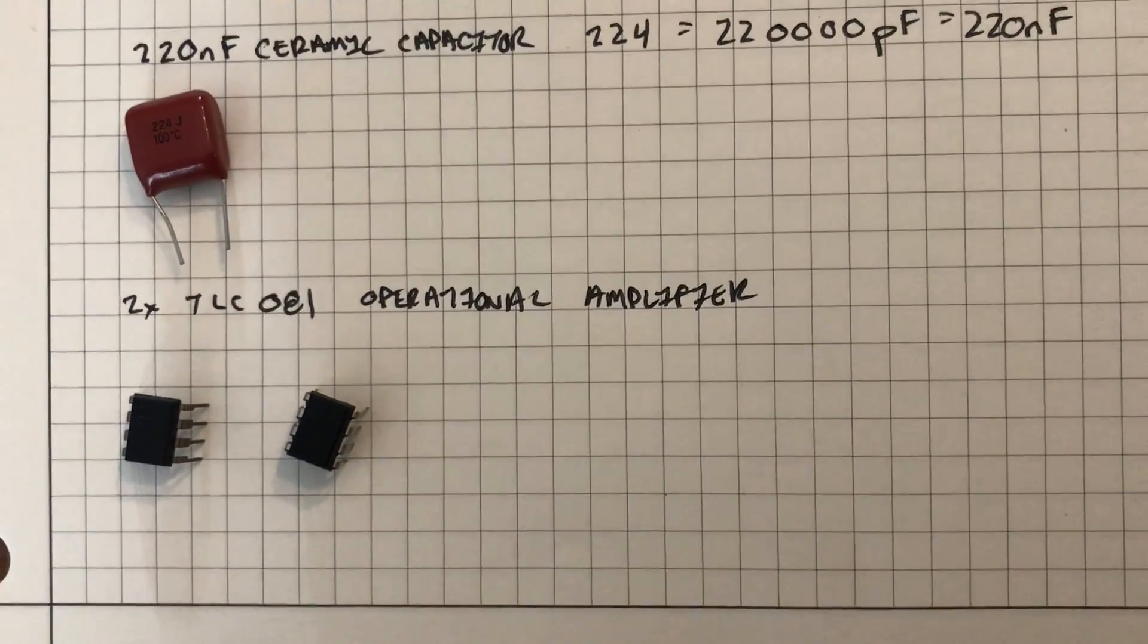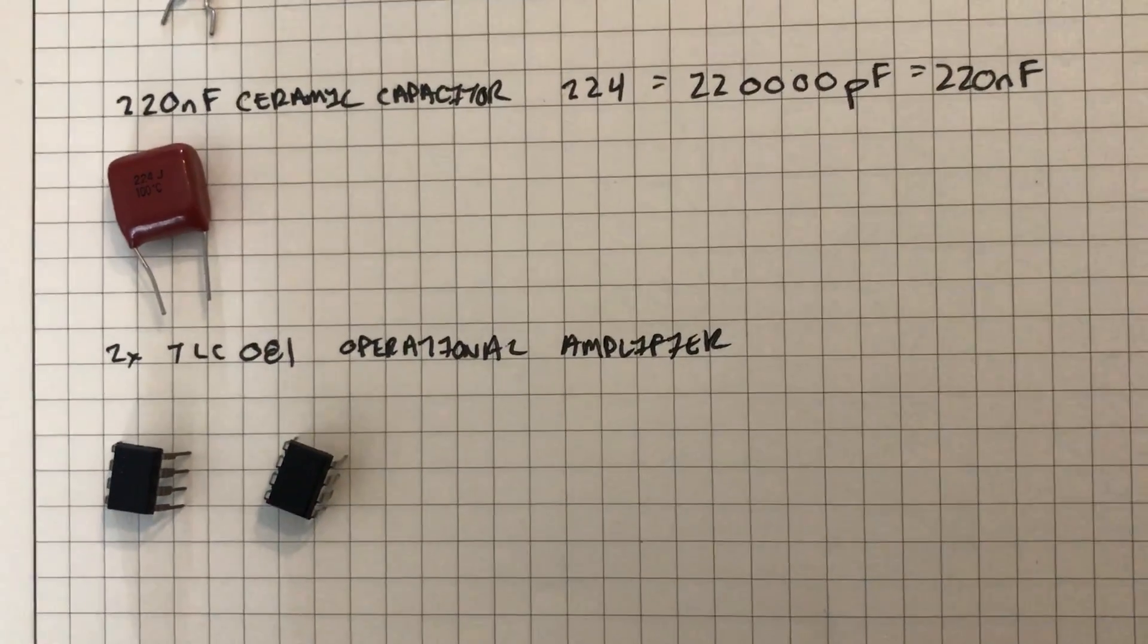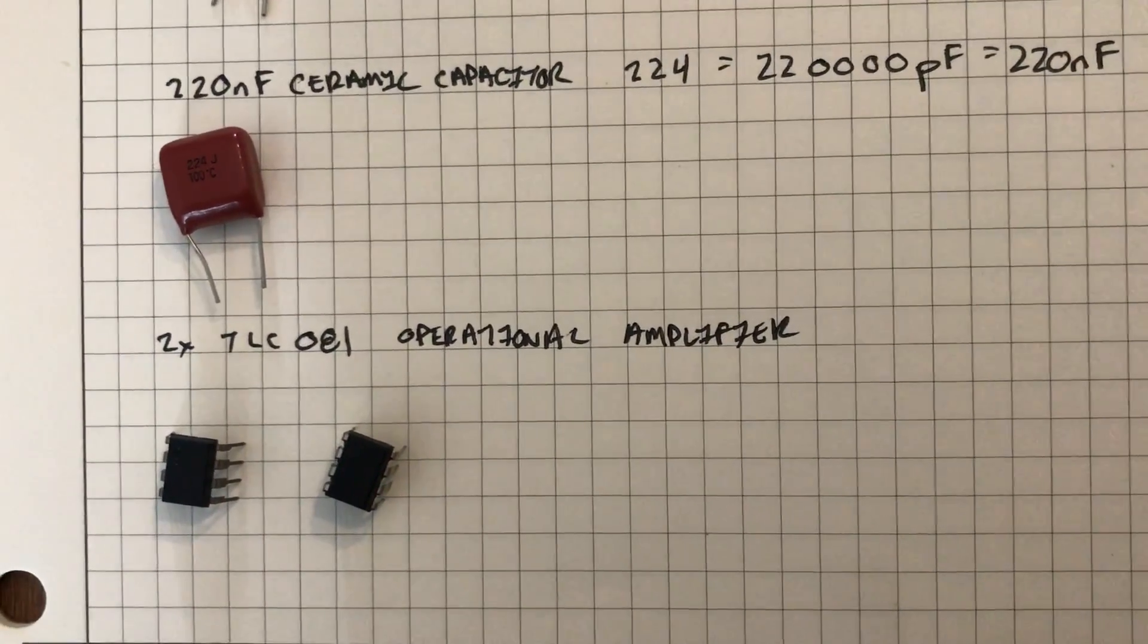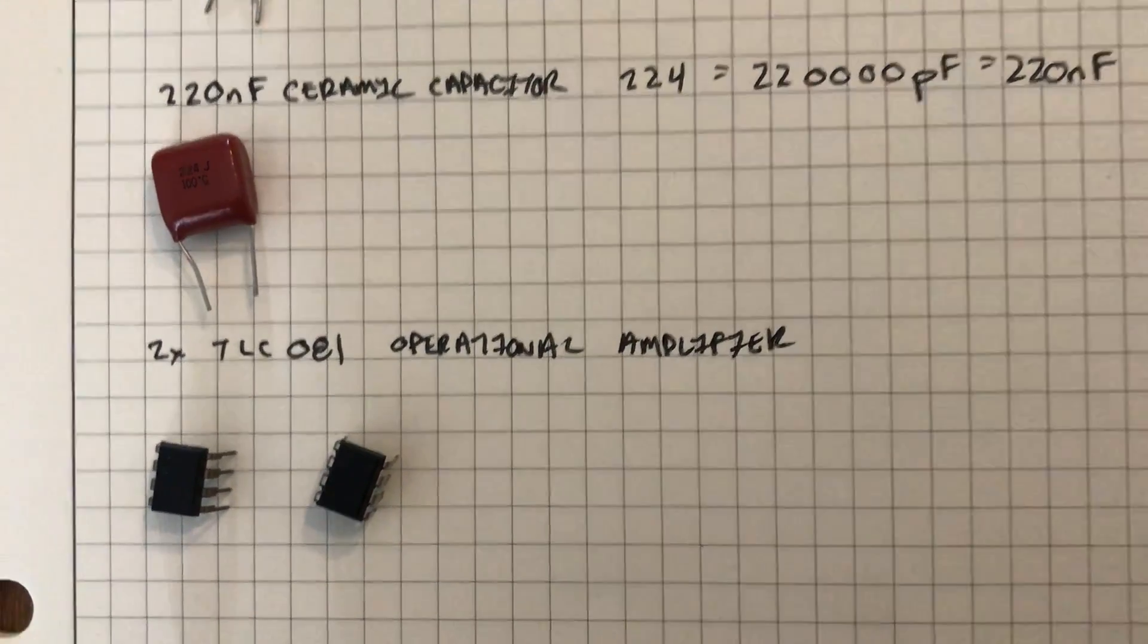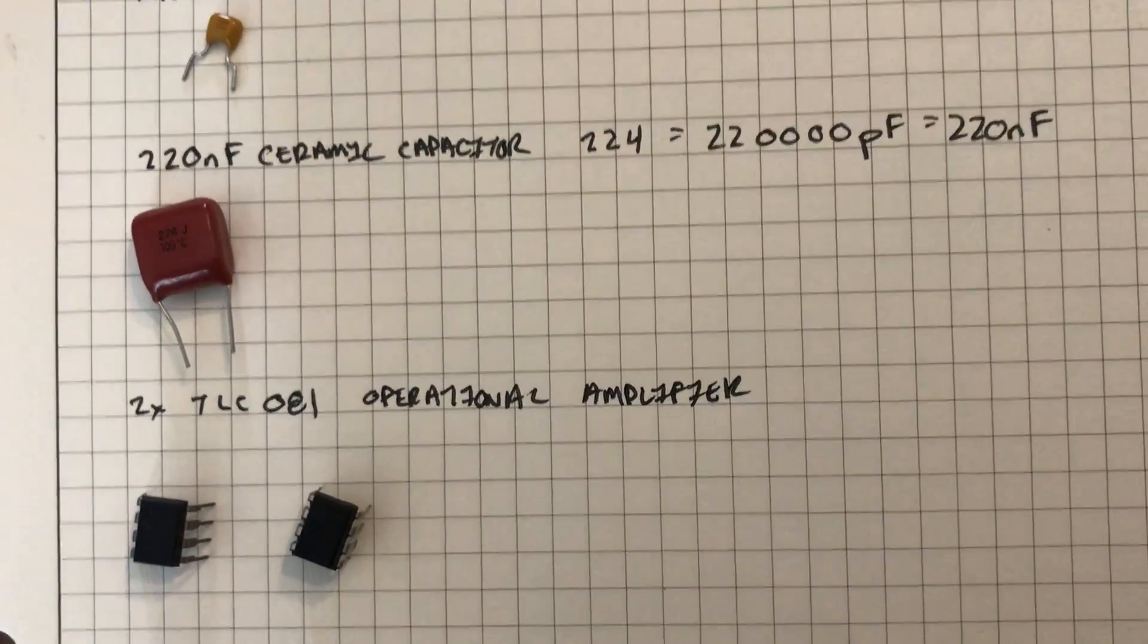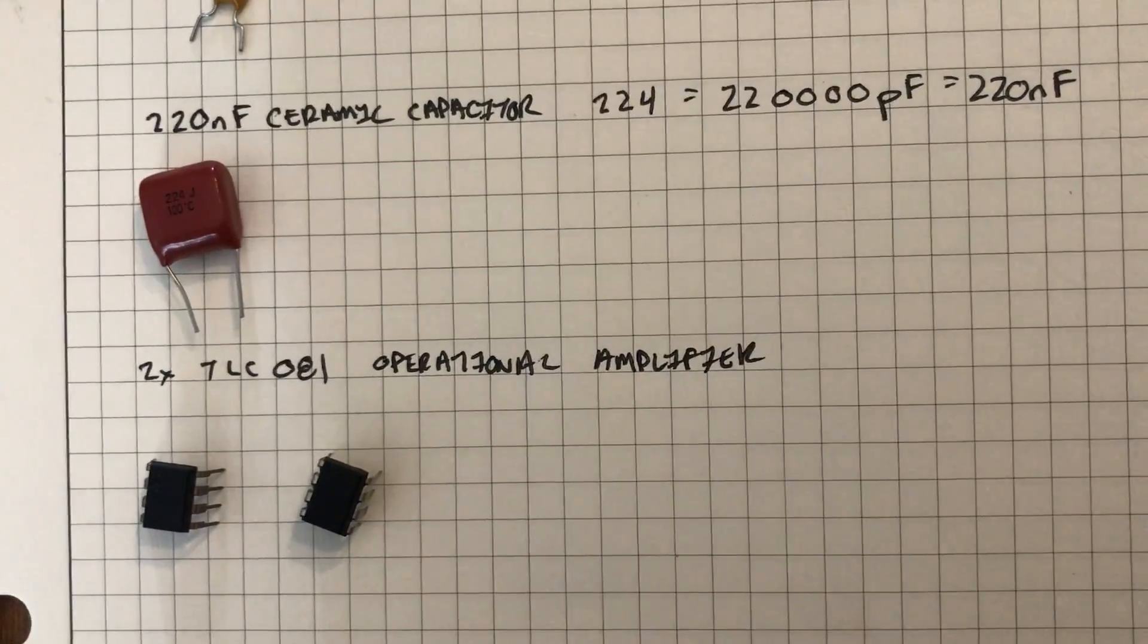The last component I have are my TLC081 operational amplifiers. These are labeled with the part number TLC081. You can't see it in the video but I promise it's there. And one of those is going to be used as a buffer and one is going to be used as the inverting summing amplifier.